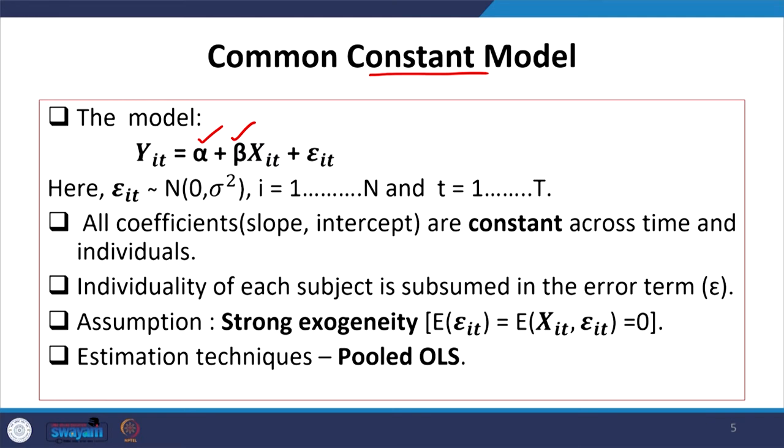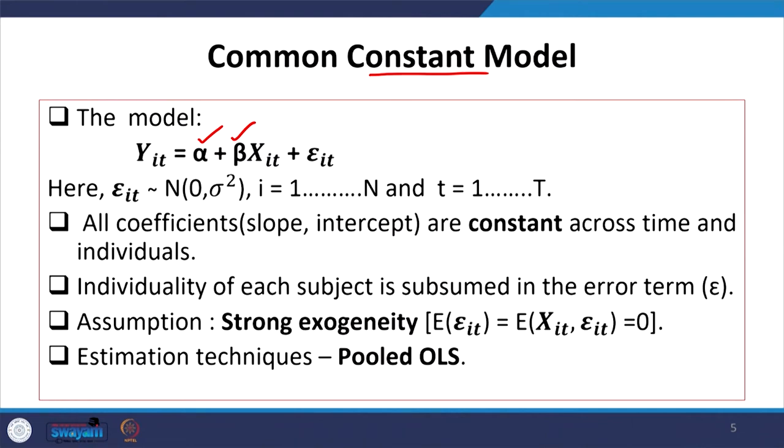The individuality of each subject is subsumed in the error term. Any sort of individual differences though are captured in error term. The assumption in this case is that there must be strong exogeneity, exogeneity between the explanatory variable and the error term. Expected value of the explanatory variable and the error term is equal to 0. The estimation technique we consider is called pooled OLS model because simply these each item by varying by time or by varying by cross section, these are simply pooled together and defined with a common model and that is why they are called pooled.